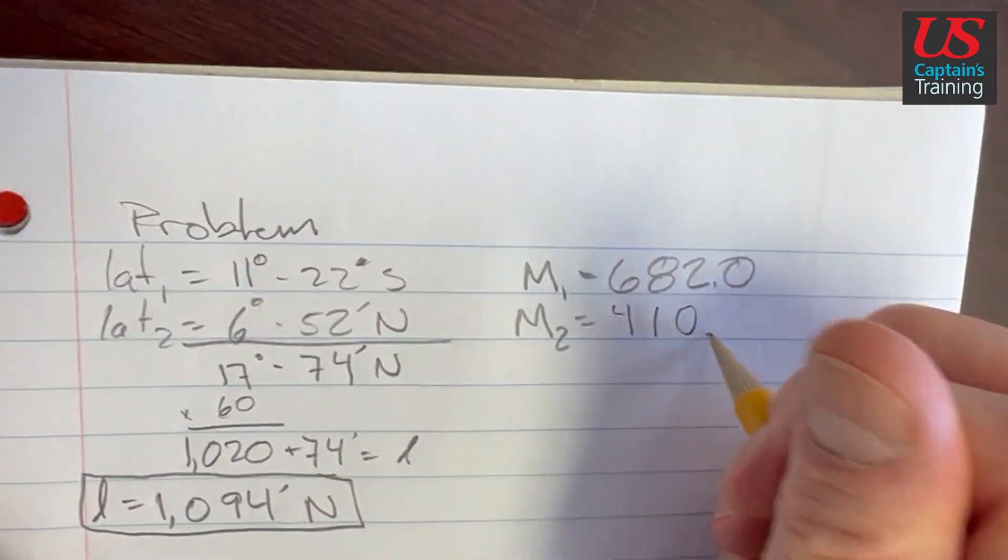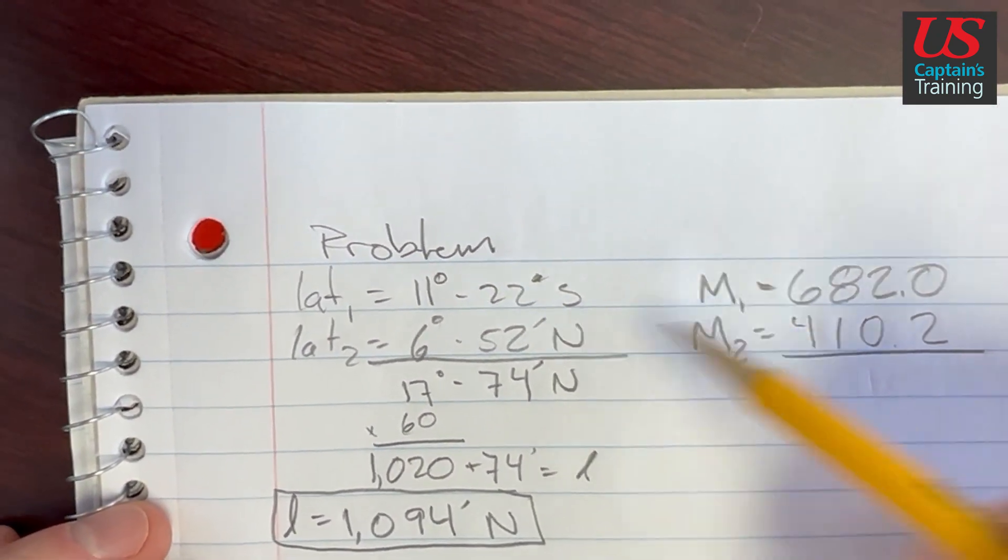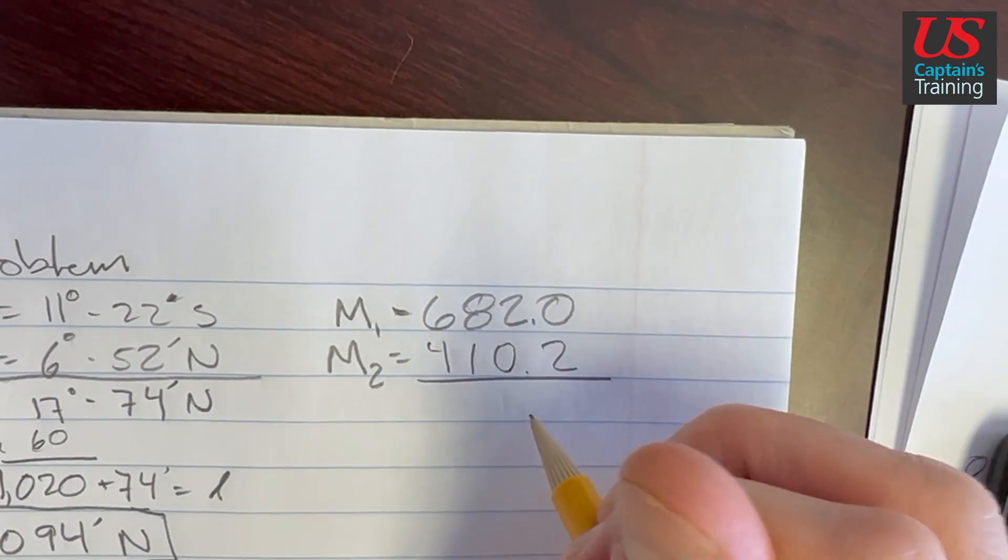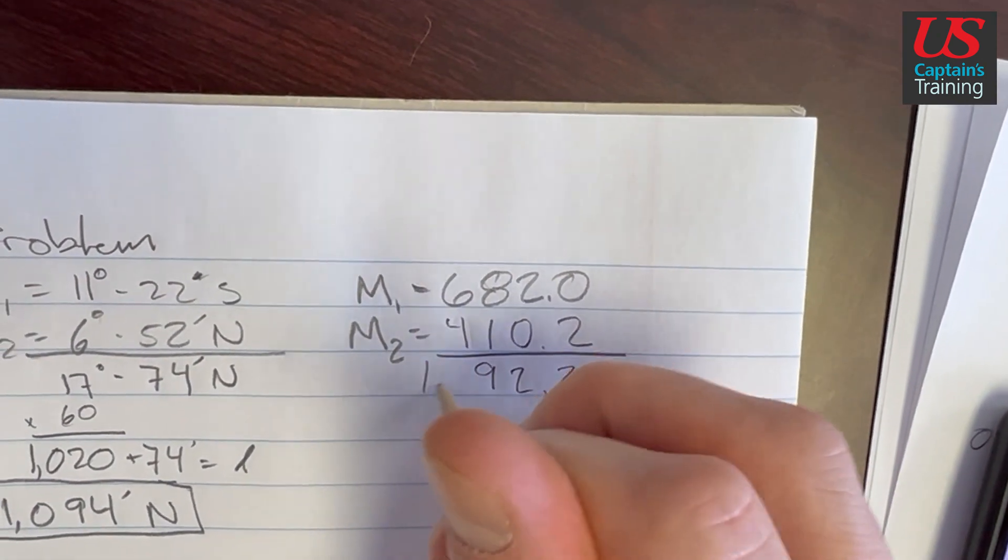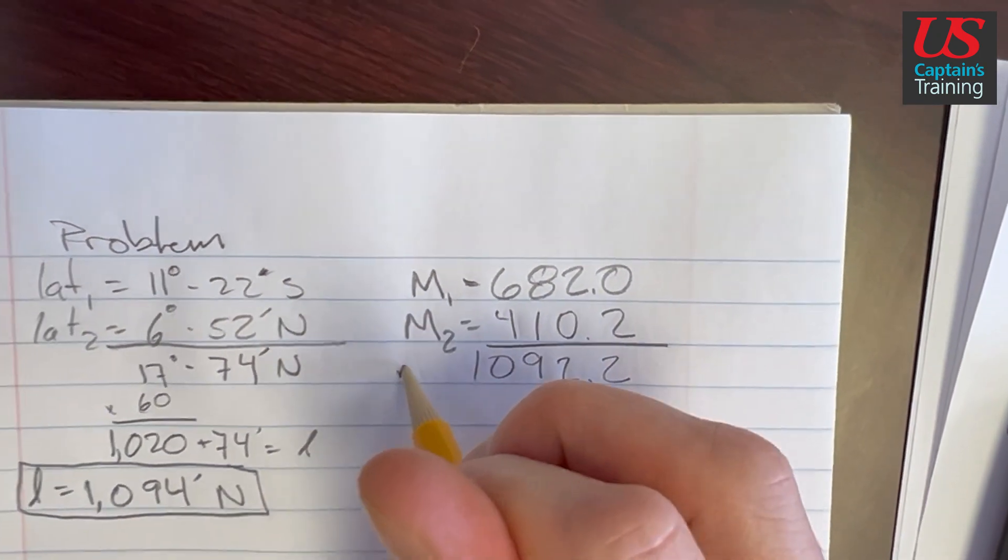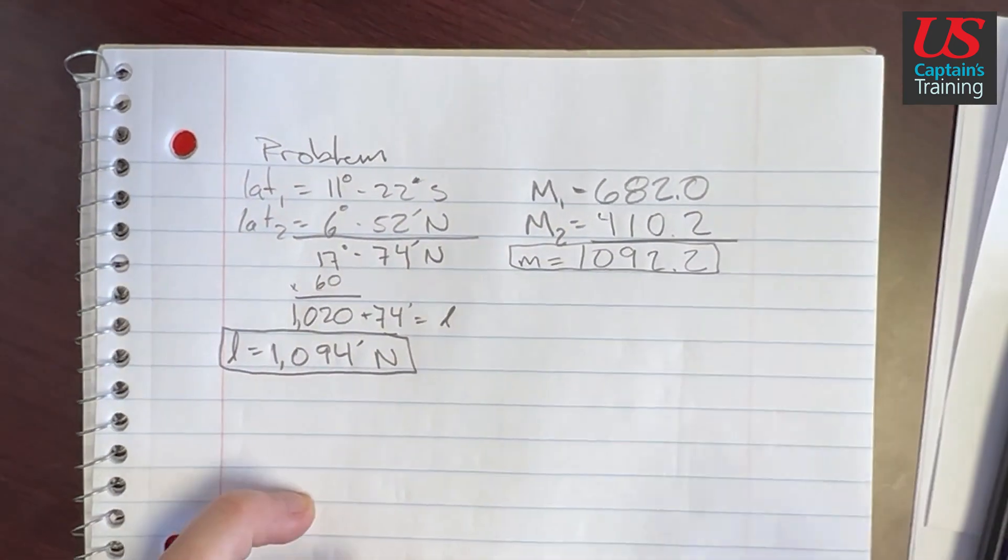And over here we added these together because we crossed the equator. So we're going to add these together. So we got m, little m equals 1,092.2. Save that.